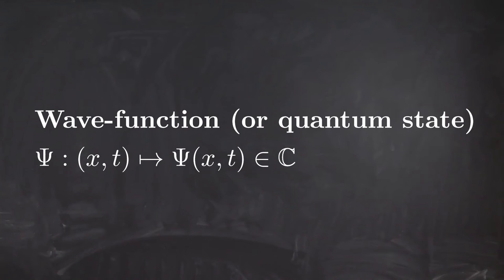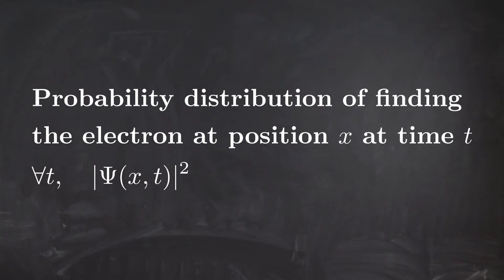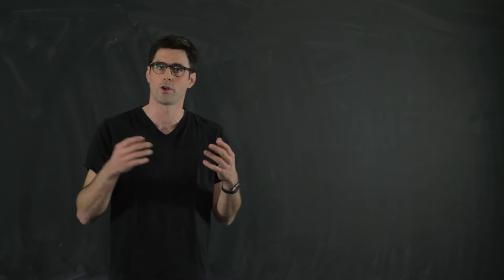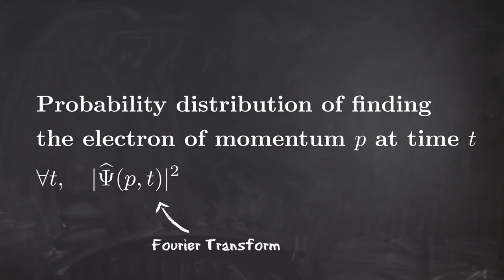Therefore, in the model of quantum mechanics, our electron is no longer defined by its position and momentum, but by a notion called the wave function, which maps any position x at time t to a complex number. The wave function is usually denoted by ψ. Part of the physical meaning comes through the modulus squared of the wave function. For each t, the modulus squared of the wave function is the probability distribution to find the electron at position x. Hence, the description of the system is intrinsically probabilistic. The square modulus of its Fourier transform is the probability to find the electron with a certain momentum p at time t.